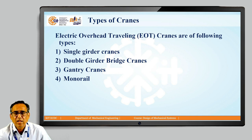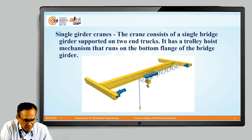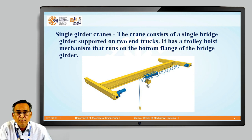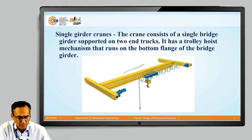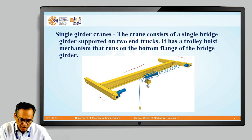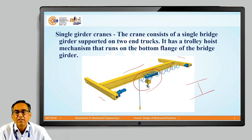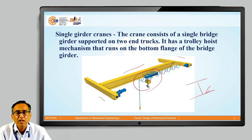We will see these types one by one. This is the single girder crane. In this single girder crane, you can see there is a single girder here. This single girder is supported on these end tracks. The crane consists of a single bridge girder supported on two end tracks as shown. It has a trolley hoist mechanism that runs on the bottom flange of the bridge girder. The girder is mainly of I-section, and the hoist is mounted on this bottom flange.